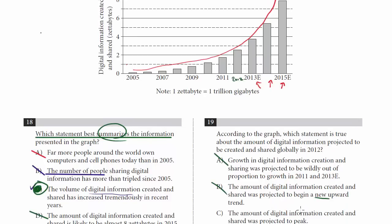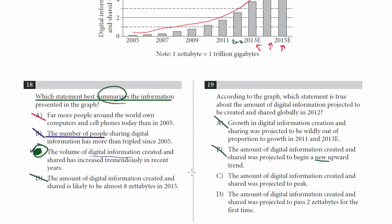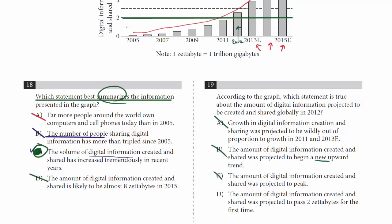Choice C: the amount of digital information created and shared was projected to peak — not in 2012; it's going to continually increase through 2012. Choice D: the amount of digital information created and shared was projected to pass two zettabytes for the first time. Here is the line for two zettabytes, and notice — in 2012 we do pass that line for the first time. So D is consistent with what we see in the graph. The answer is choice D.